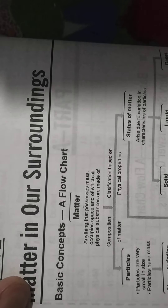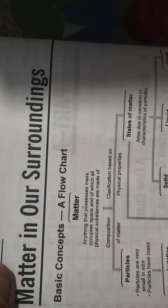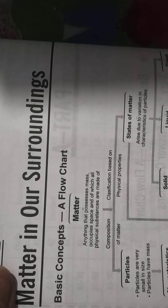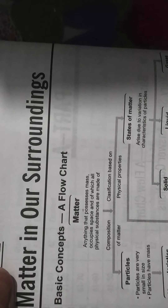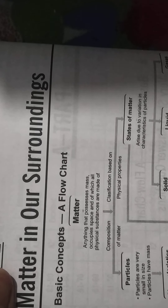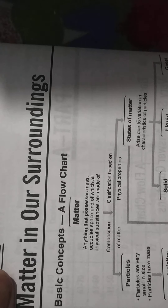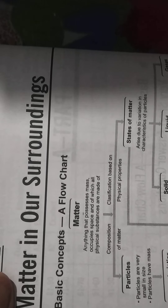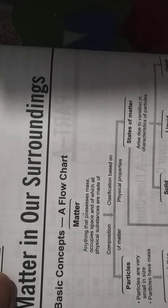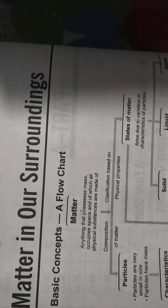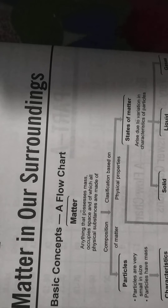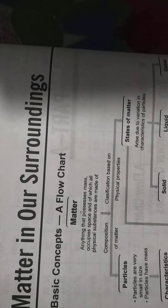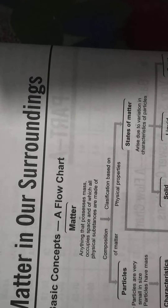Second is liquid. Liquid has no fixed shape but has a fixed volume. Liquid takes up the shape of the container in which it is kept. They are not rigid and change shape.